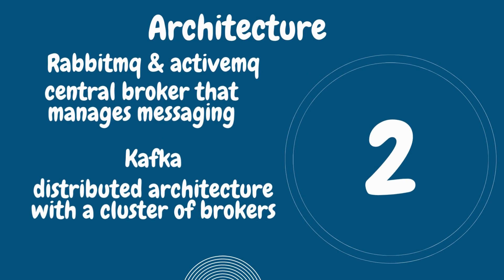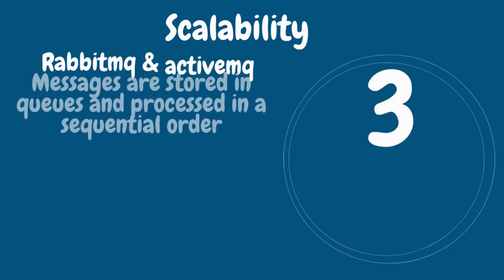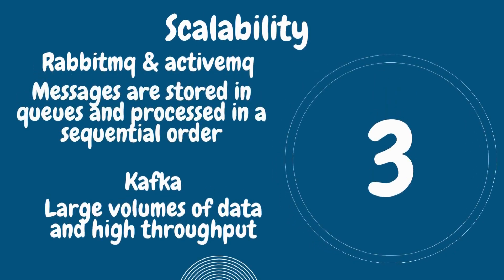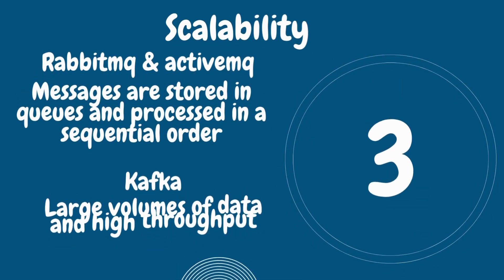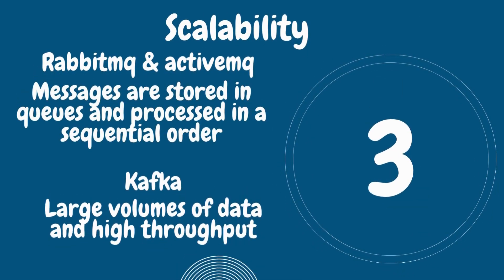Number two is architecture. RabbitMQ and ActiveMQ have a central broker that manages messaging, while Kafka has a distributed architecture with clusters of brokers. That's the core difference in architecture.